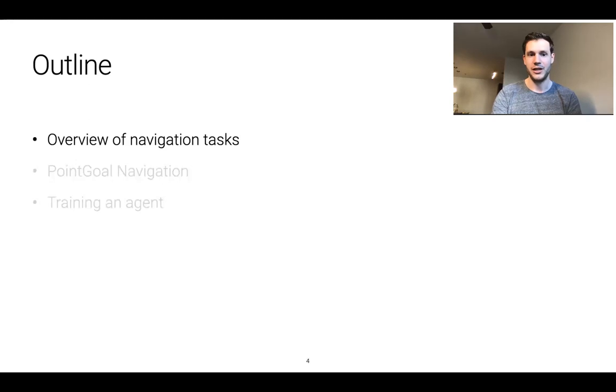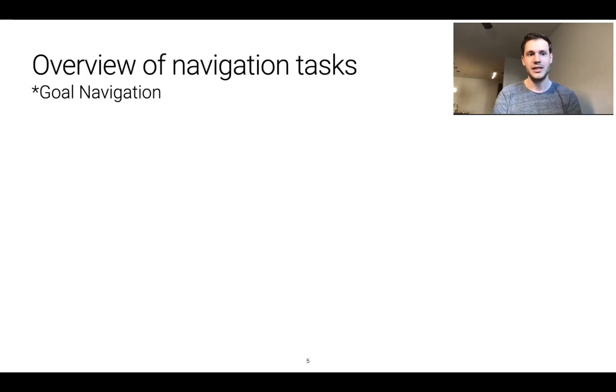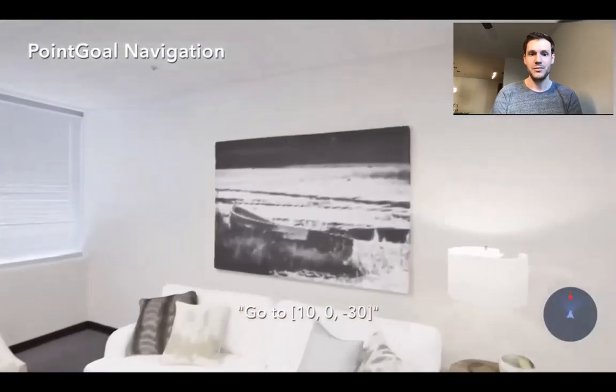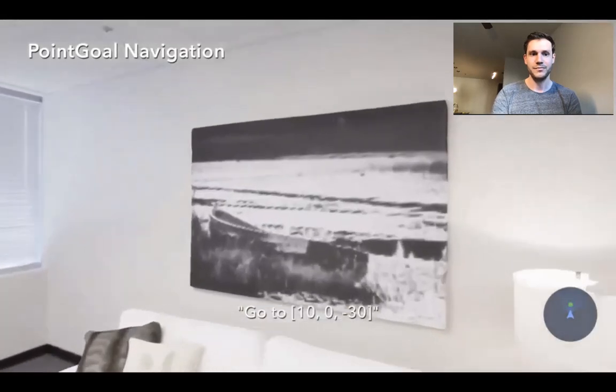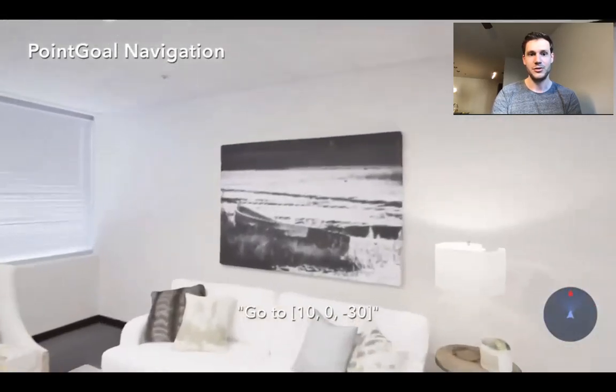So let's start with the overview of navigation tasks. The first type of task we'll talk about is where the agent is tasked with navigating to a specific place in the environment specified by a goal in various forms such as point goal navigation where the agent is tasked with navigating to a point in the environment specified relative to its initial location.